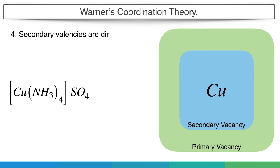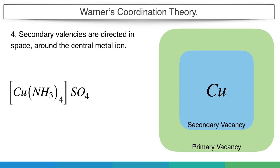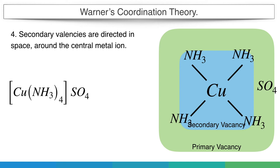And lastly, secondary valencies are directed in space around the central metal ion. This is very important that the coordinate bonds formed by secondary valencies are directional. That means they are directed in a particular direction with a proper bond angle. This is not the case with the primary valencies.